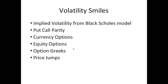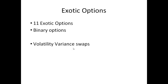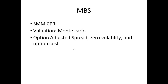For the volatility smile, the first step is to calculate implied volatility using market prices of call and put options via the Black-Scholes model — we input option prices and extract volatility. We then cover put-call parity, which is a very important equation. The volatility smile differs by asset class: the currency smile is even, whereas equity assumes higher volatility at lower prices. We also cover option Greeks, price jumps, and around 11 exotic options such as binary options and variance options — theory only, no valuation required.